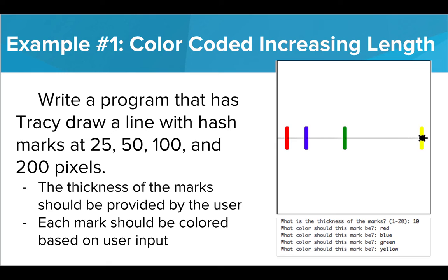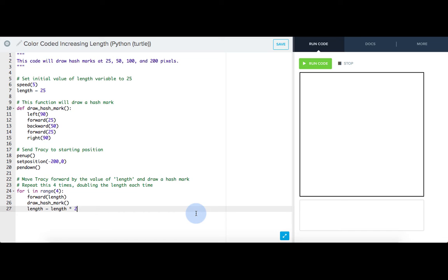In this example, we want Tracy to draw the same line with hash marks as in the last lesson, but this time we want to ask the user for the thickness of the marks and what color each mark should be. We already have much of our code written from the last lesson, but we need to include some user input.